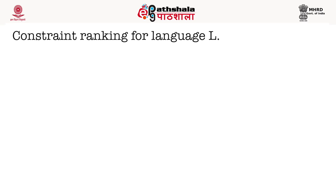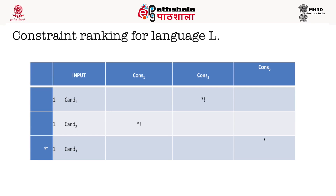For constraint ranking in language L, given an input with potential candidates 1, 2, and 3, and constraints 1, 2, and 3: candidate 1 violates constraint 2, candidate 2 violates constraint 1, and candidate 3 violates constraint 3. Since candidates 1 and 2 violate the higher-ranked constraints, these violations are called fatal. Candidate 3 violates only constraint 3, which is not fatal, and hence it is chosen as the most optimal candidate.